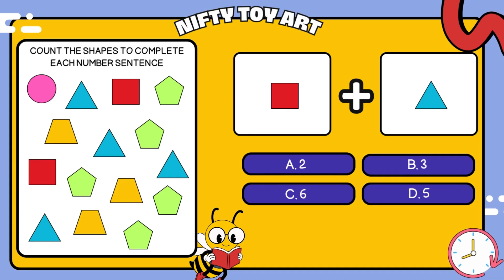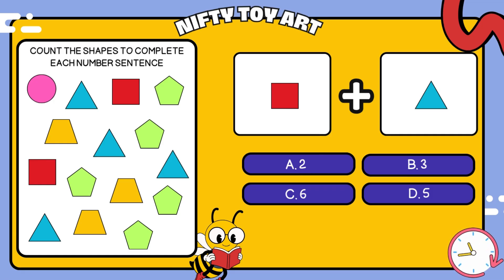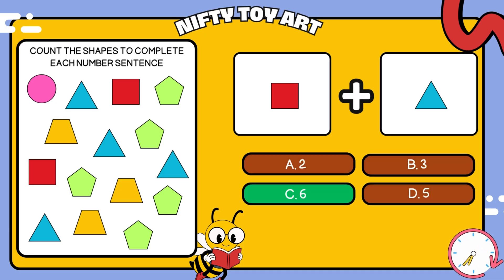I have a square plus triangle. How many all together? That's right, six.